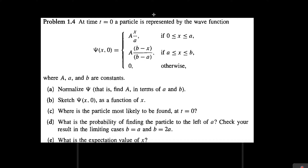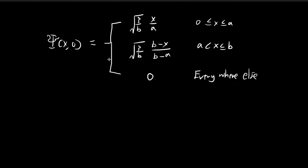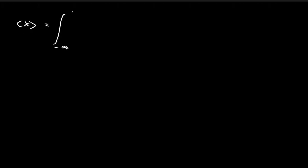We need to find the expected value of x. To recap, we found that the constant for this wave function is equal to the square root of 3 over b, so that's why this is going to be the wave function. Now that we're looking for the expected value of x, we're just going to substitute everything into this formula.